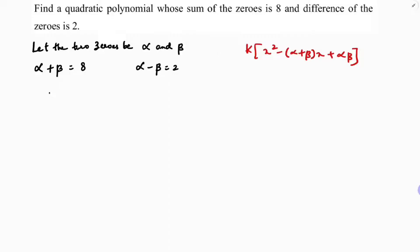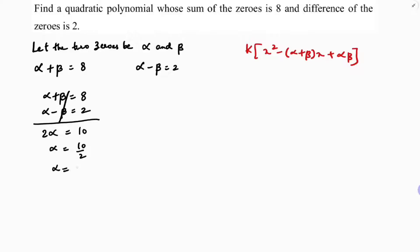Solving the two equations: alpha plus beta is 8, and alpha minus beta is 2. Adding them gives 2 alpha equals 10, so alpha is 10 by 2, which means alpha is 5. Substituting back, 5 plus beta equals 8, so beta equals 8 minus 5, which gives beta is 3.